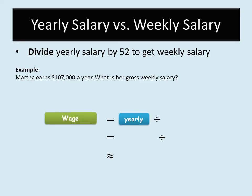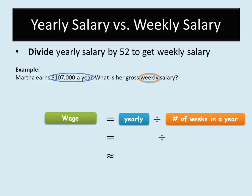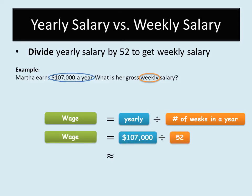To get the weekly wage, take the yearly salary and divide it by the number of weeks in a year. The yearly salary is $107,000 divided by 52. You get a number with a long decimal, but rounded to two decimal places the amount Maria will earn is $2,057.69 per week. Students, you've now learned how to calculate salaries using a variety of examples, so go forth and conquer — you can solve any problem involving calculation of wages and salary!